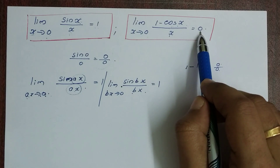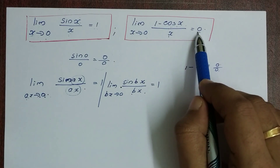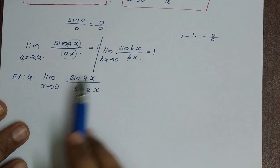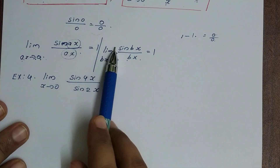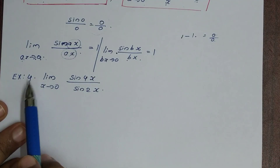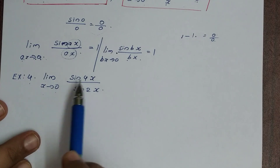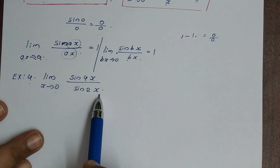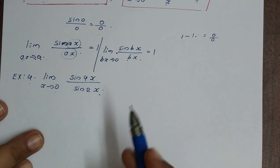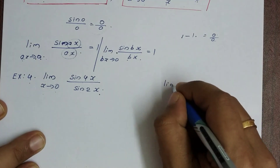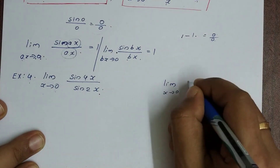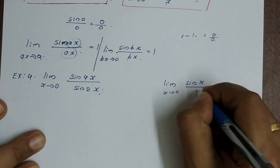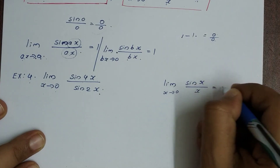We will solve this and you will learn these two results. Let's take Example 4: limit x tends to 0, sin 4x divided by sin 2x. We will use the result limit x tends to 0, sin x divided by x is equal to 1.